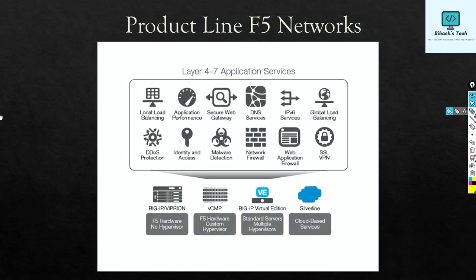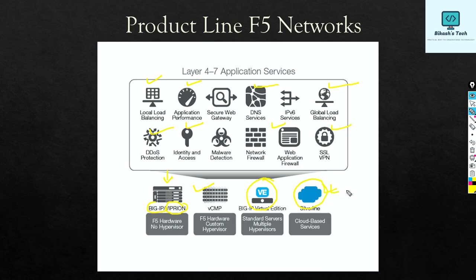Looking at the product line of F5, there are a lot of services they offer: load balancing, application performance, DNS services, global load balancer, SSL, web application firewall, identity, and DDoS. You can run these services on their hardware boxes — Big-IP or Viprion — and they have a supervisor engine as well. They also have virtual devices and cloud services, so you can use all these services across these different deployment options.